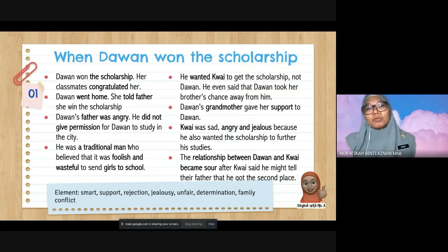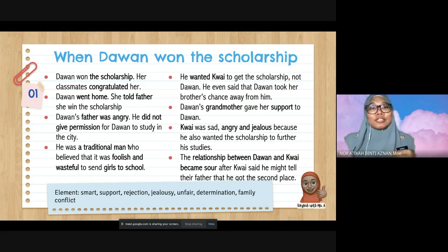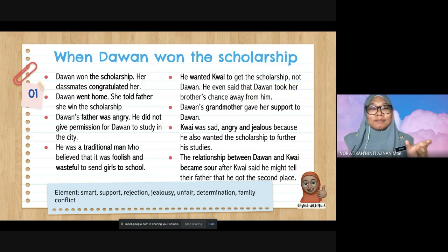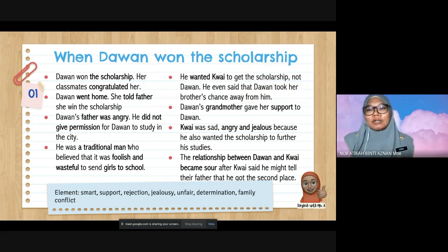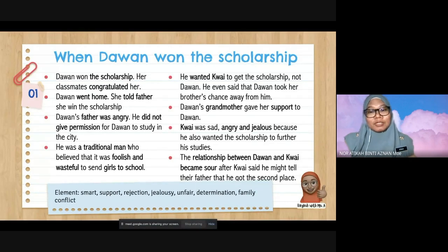Event one: When Dawan won the scholarship. Her classmates congratulated her. She went home and told her father she won the scholarship, but father was angry and did not give permission for Dawan to study. He was a traditional man who believed it was foolish and wasteful to send girls to school. Father also wanted Kwai to get the scholarship and said Dawan took her brother's chance away. Grandmother gave Dawan her support, but Kwai was sad, angry, and jealous because he also wanted the scholarship. Their sibling relationship became sour.